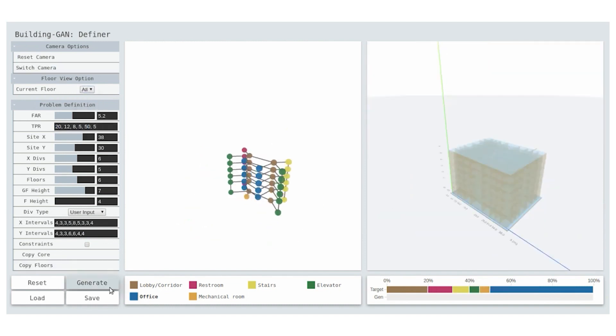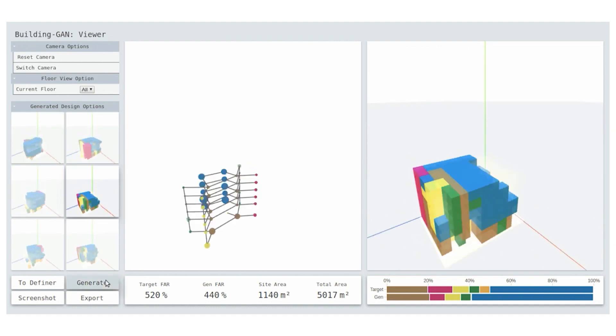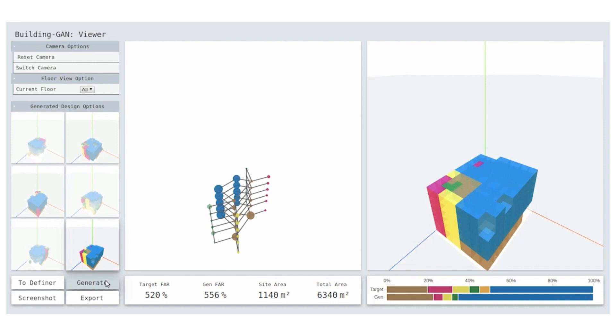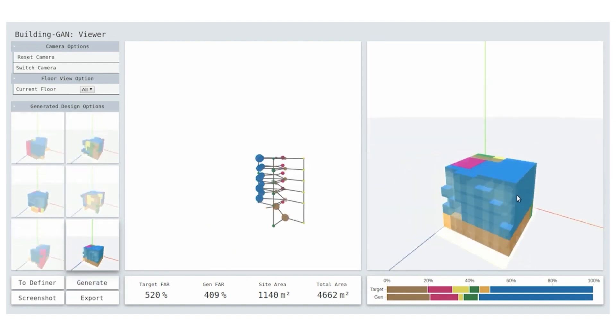Once the design options are generated, the user can browse different results, generate a new batch of designs, check the floor plans, or look back to modify the bubble diagram until the best design is created.